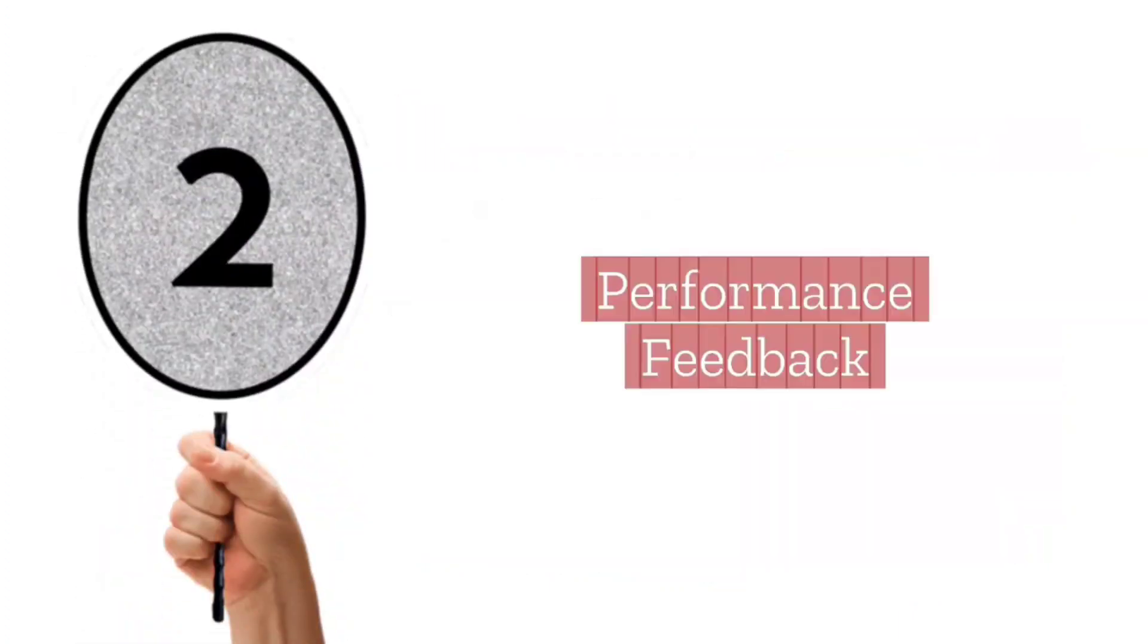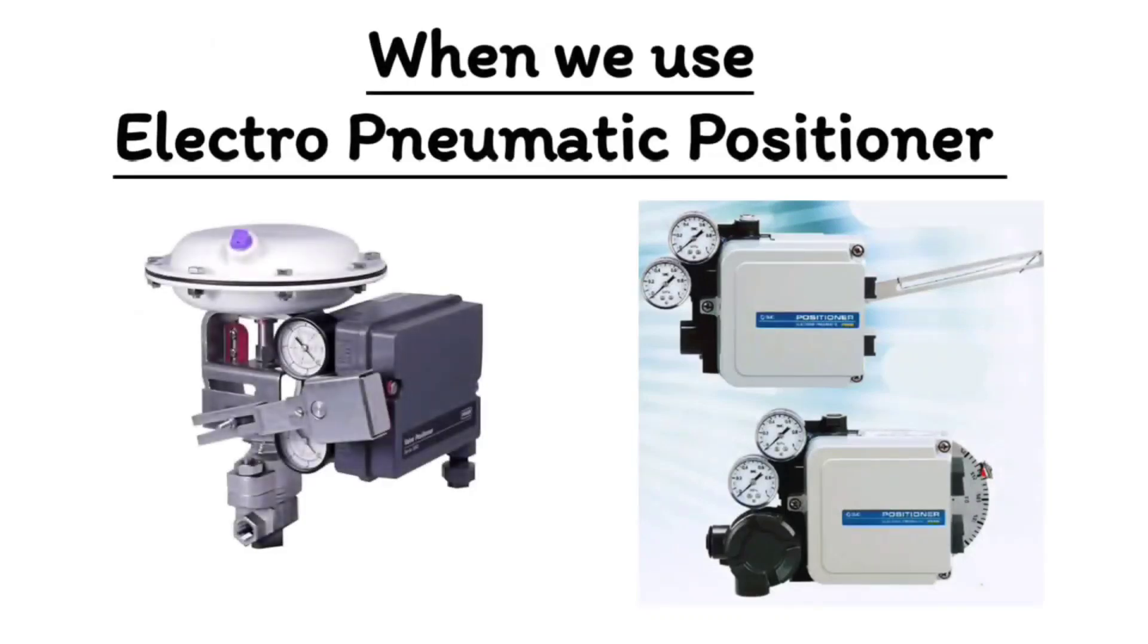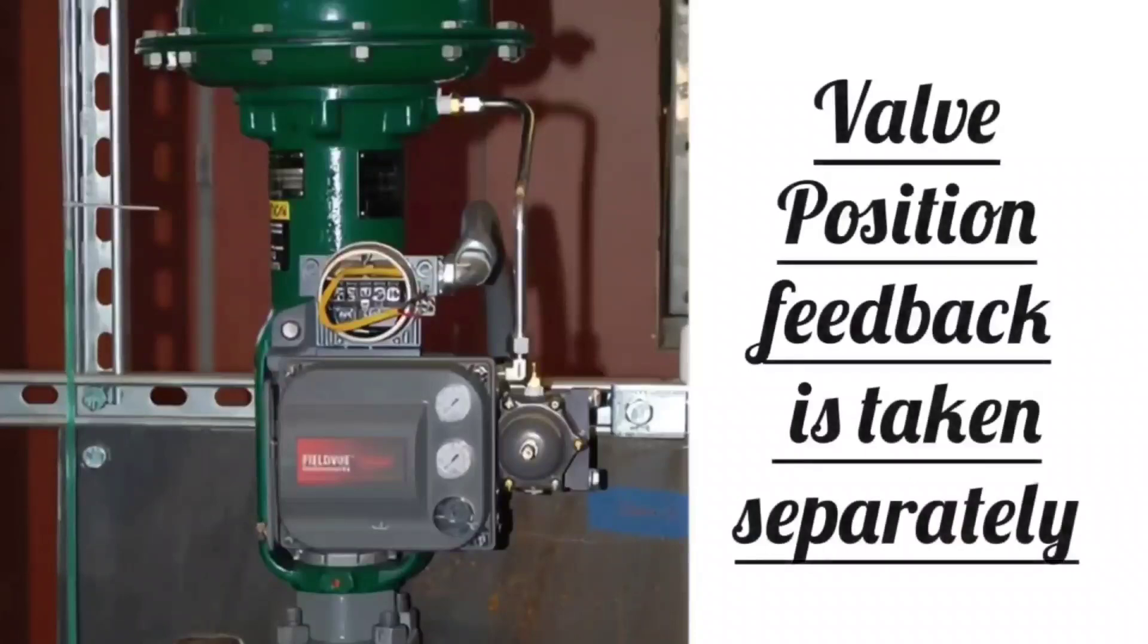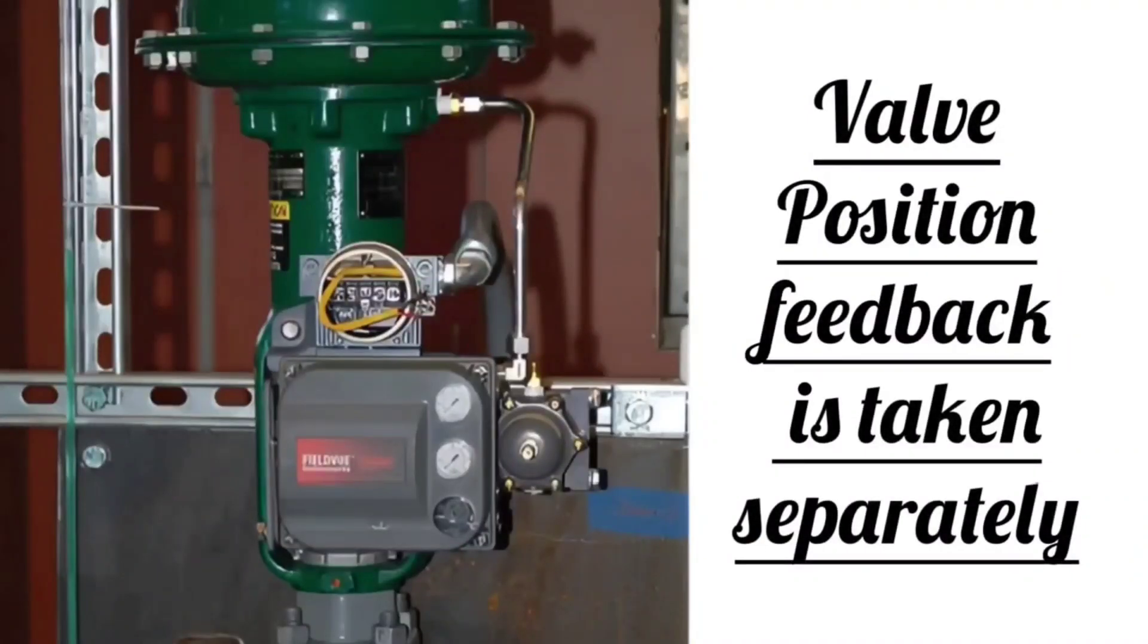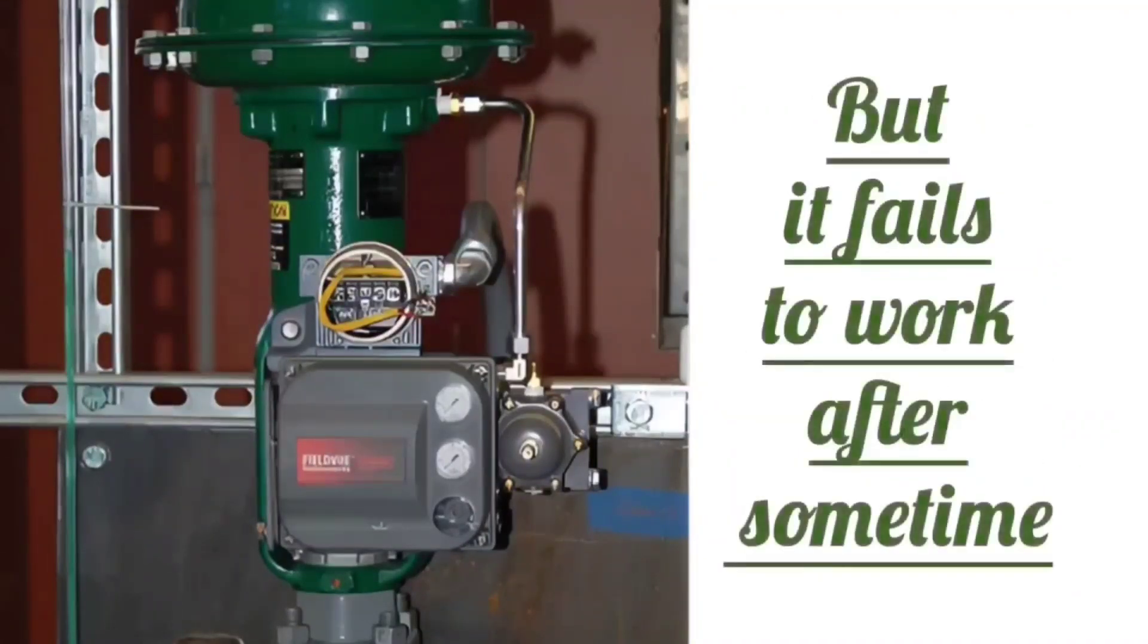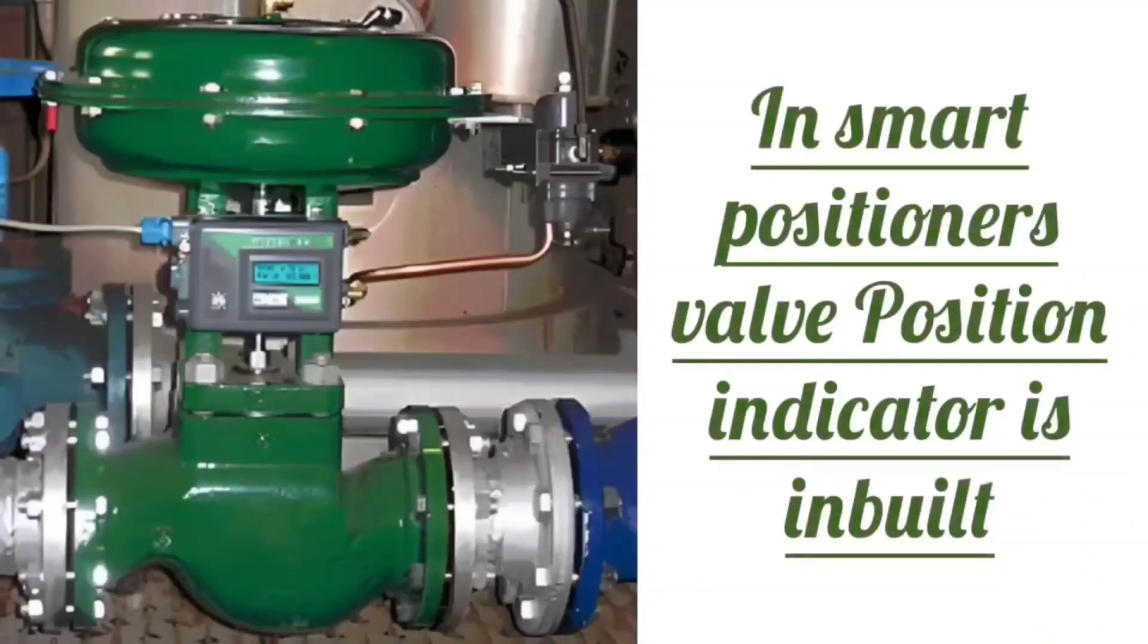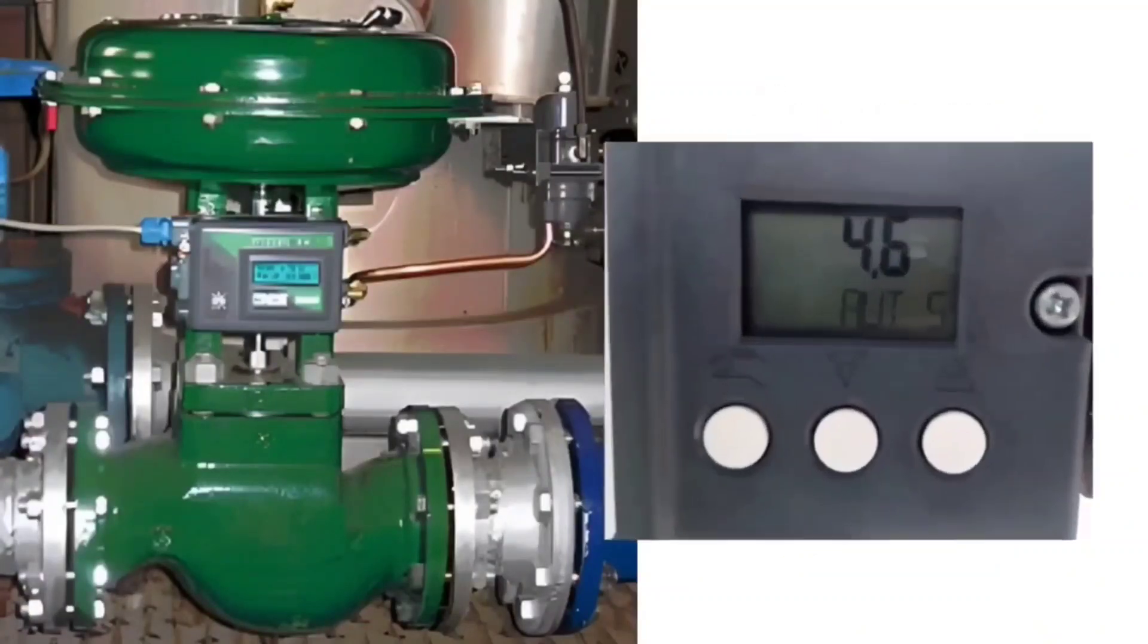Next is performance feedback. When we use normal electro-pneumatic positioner, the position feedback signal of valve has to be taken separately, which normally fails after some time. So valve's opening percentage has to be seen in the field. Smart positioner has inbuilt valve position indicator and you also get the feedback of the position of the valve.